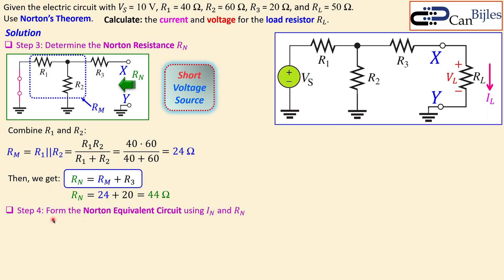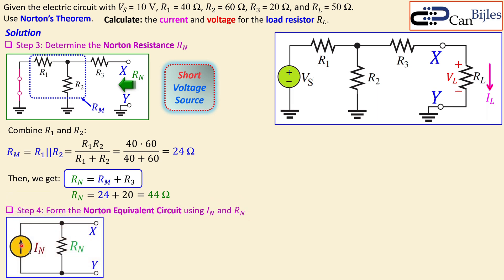We can now form the Norton equivalent circuit using In and Rn. The equivalent circuit has a current source In in parallel with Rn. In the Thevenin case it was a voltage source in series with the Thevenin resistance — so you can convert between the two equivalent circuits in either direction.